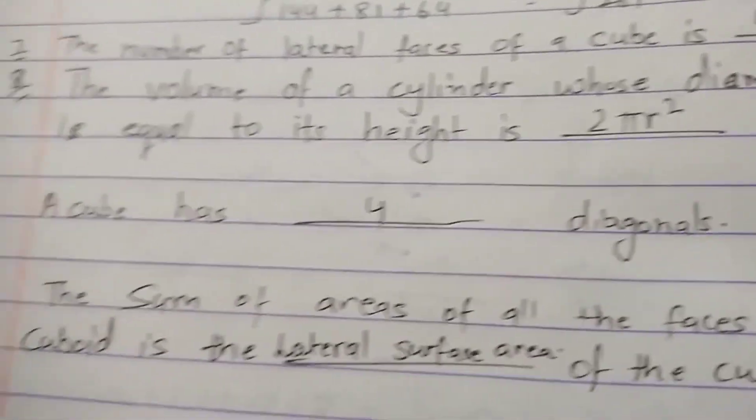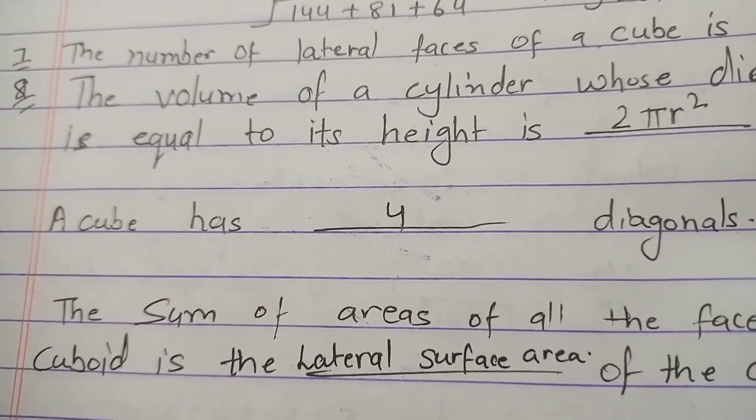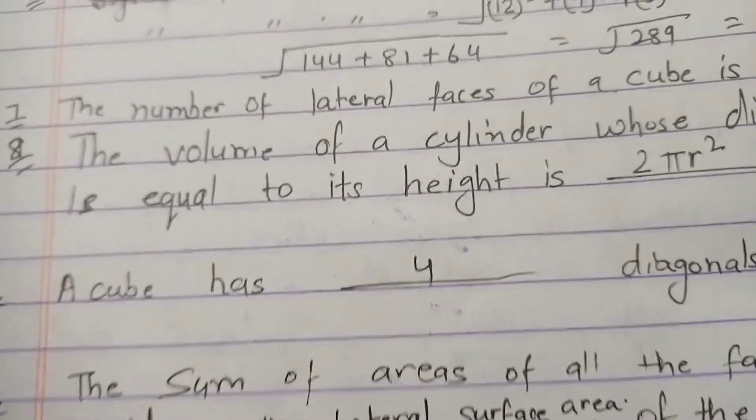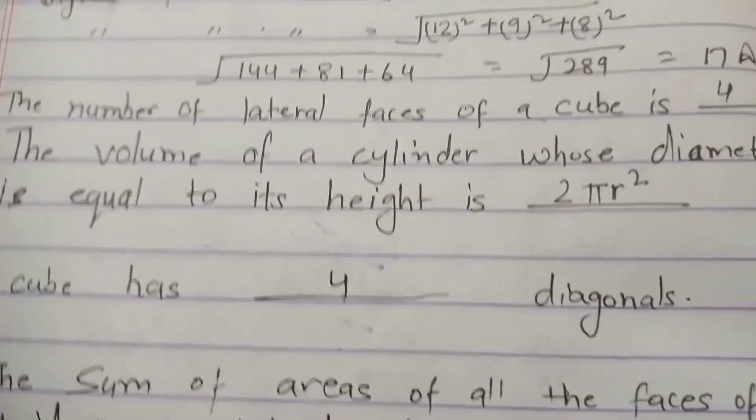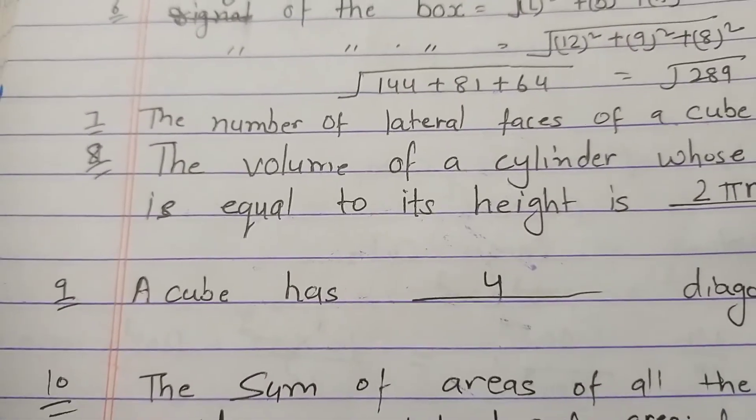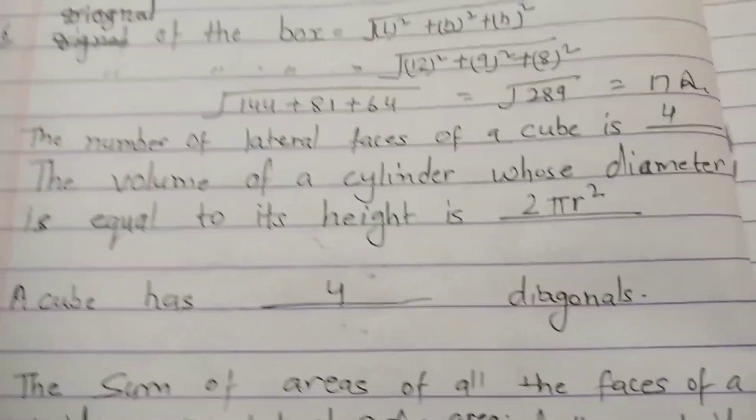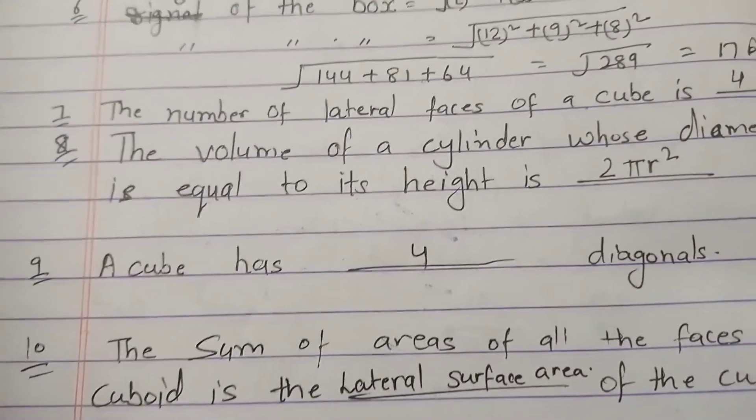Eighth question: the volume of cylinder whose diameter is equal to its height is? The answer is 2πr². Ninth question: the cube has how many diagonals? The answer is four.